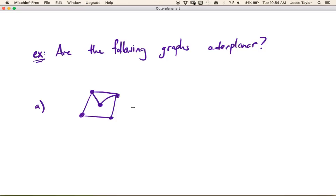So it turns out this one can. This graph is isomorphic to this. You can imagine just flipping this up and putting it on top. And now every vertex is on the infinite face. So in this case, yes. Here is the outer planar embedding.